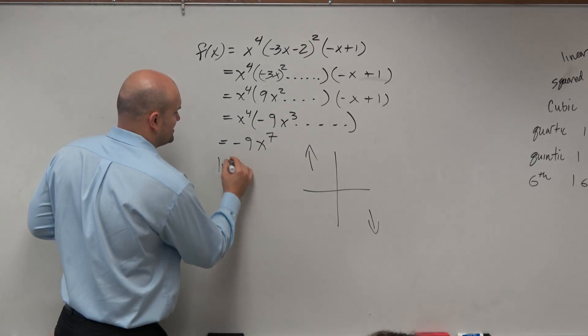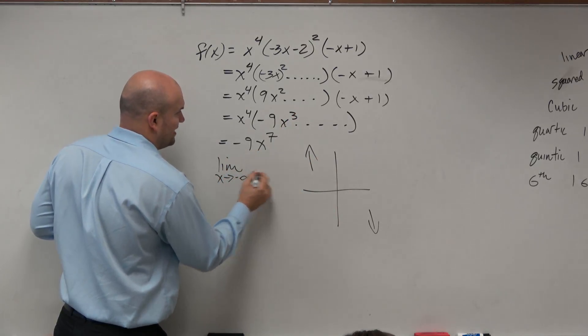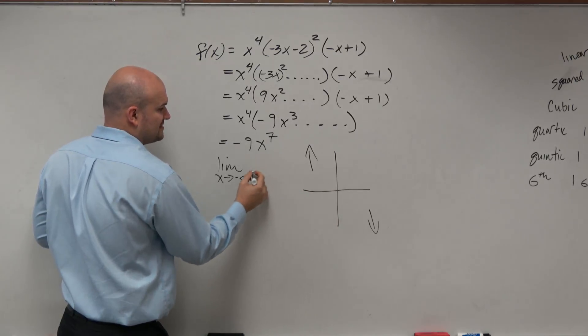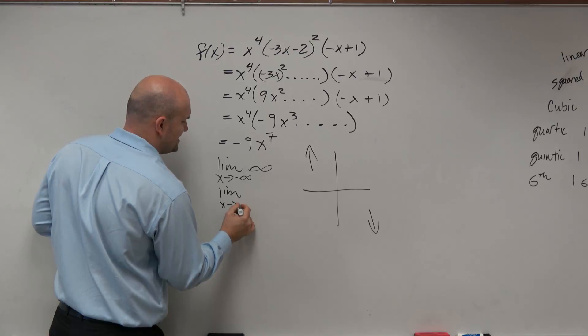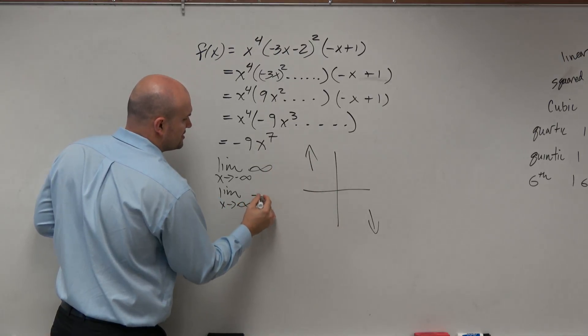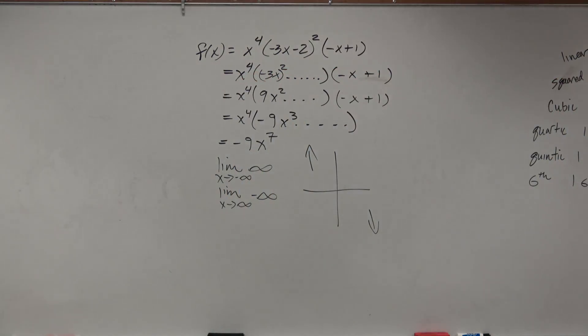So I'd say as the limit as x approaches negative infinity, which means as we're going to the left, it's going to go to infinity. And the limit as x approaches positive infinity goes towards negative infinity. That is it.